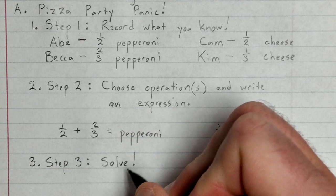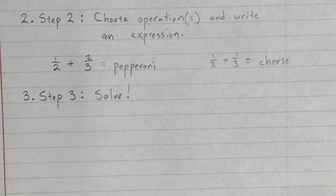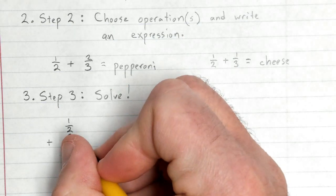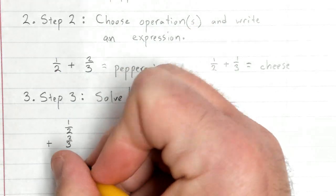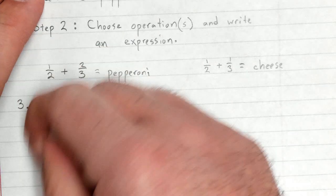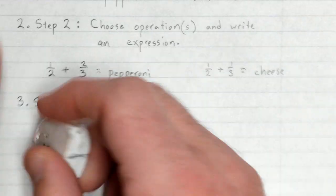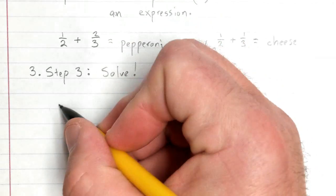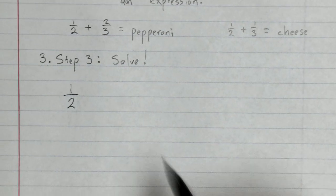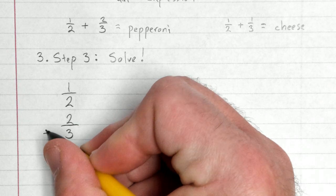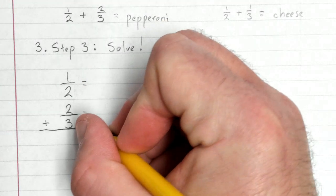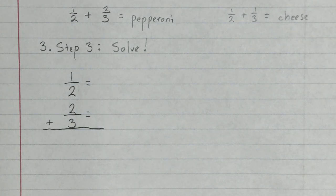Step three, let's solve one half plus two thirds. I'm going to spread this out a little bit so we can see everything. One half plus two thirds. My denominators are different, I cannot add them yet, so I'm going to have to come up with some common denominator. The least common multiple for two and three, the least common denominator, would be six.